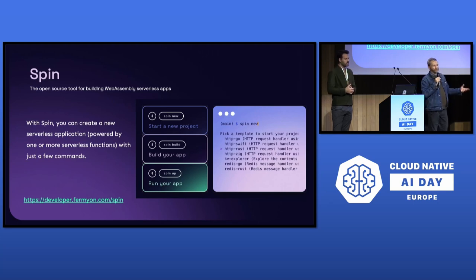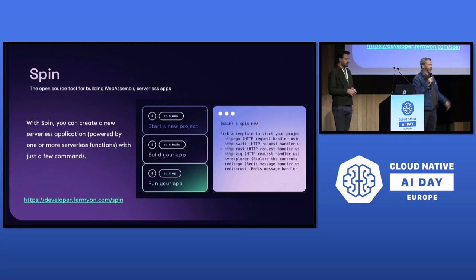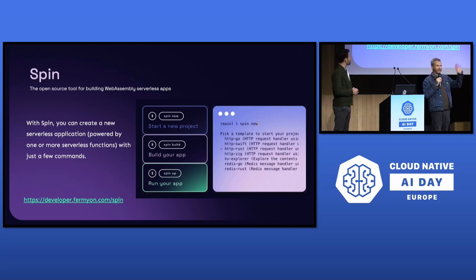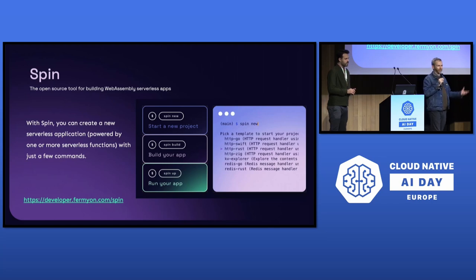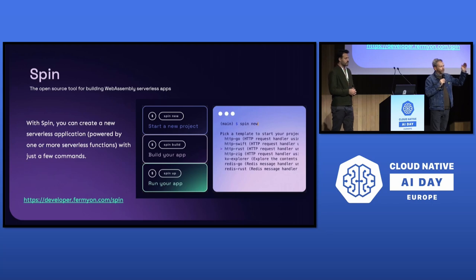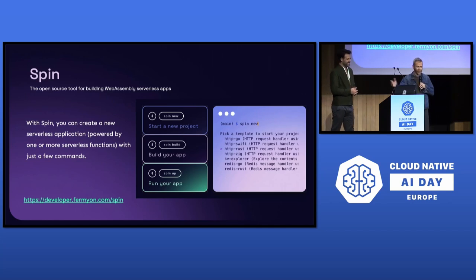So we built a tool called Spin. Spin is a developer framework and tool for building serverless applications that are compiled into WebAssembly and can run in a wide variety of environments. Spin is all open source. Our core user story for all of 2022 was: as a developer, I can go from a blinking cursor to a deployed application in two minutes or less. By the end of that year, we had it down to 66 seconds to type the commands needed to build and deploy your first app.